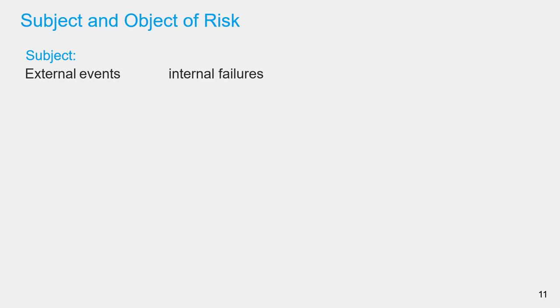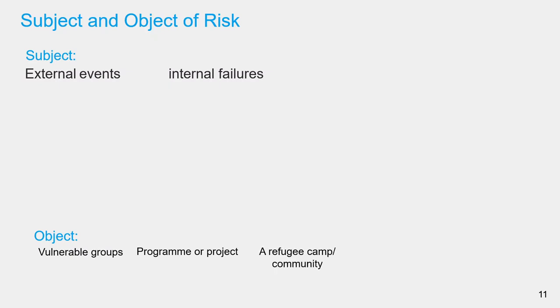A subject of risk can be an external event. Risk caused by cyclones, high rainfall events, or droughts are examples. Or it could be internal failures. In infrastructure asset management, we commonly look at risk driven by internal component failures. A failure of a component — for instance, a pump — in a water supply system impacts the system's function and its service delivery. The object is the entity that suffers from the risk. It could be vulnerable groups, a program or a project, or a certain community like a village or a refugee camp. It could also be actors in a geographical domain or in an infrastructure service — for example, consumers of a water supply system.